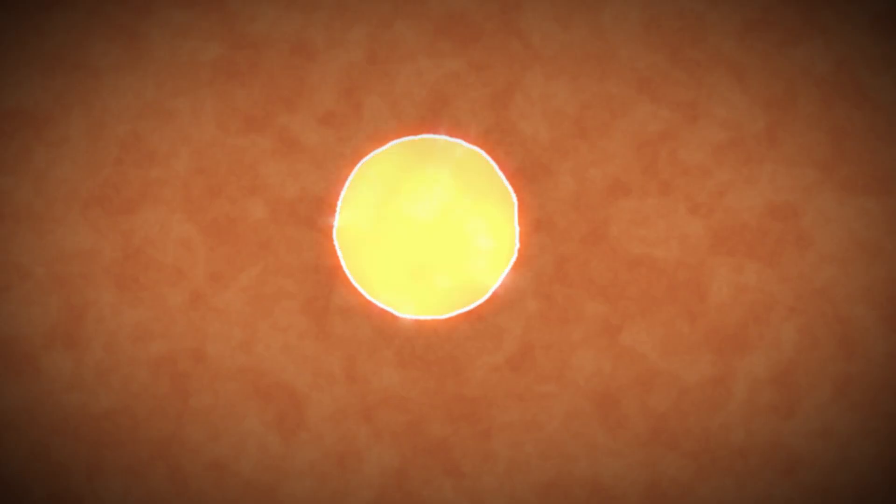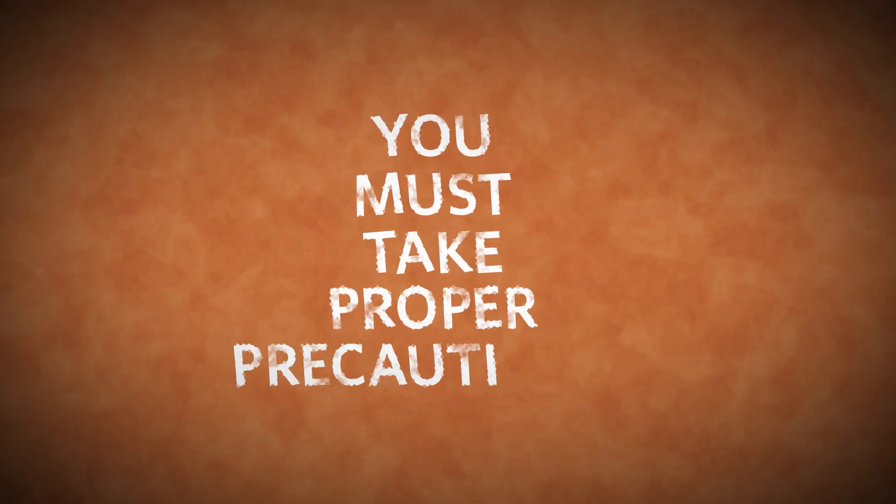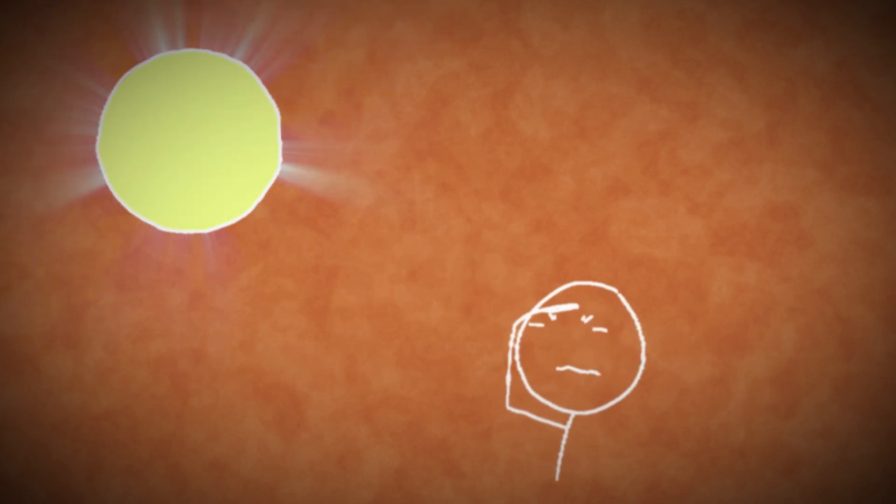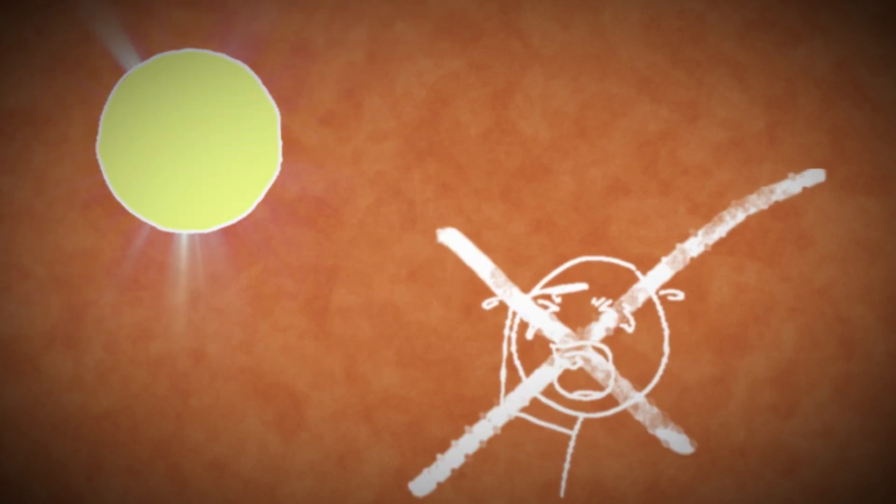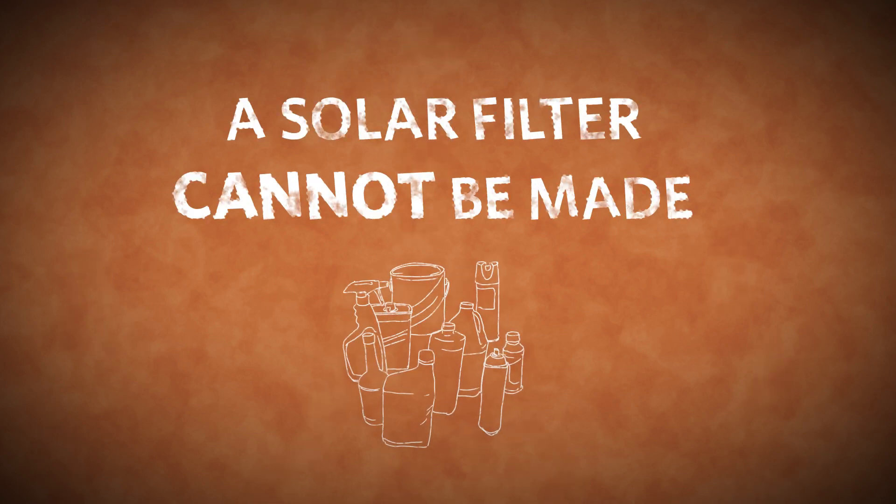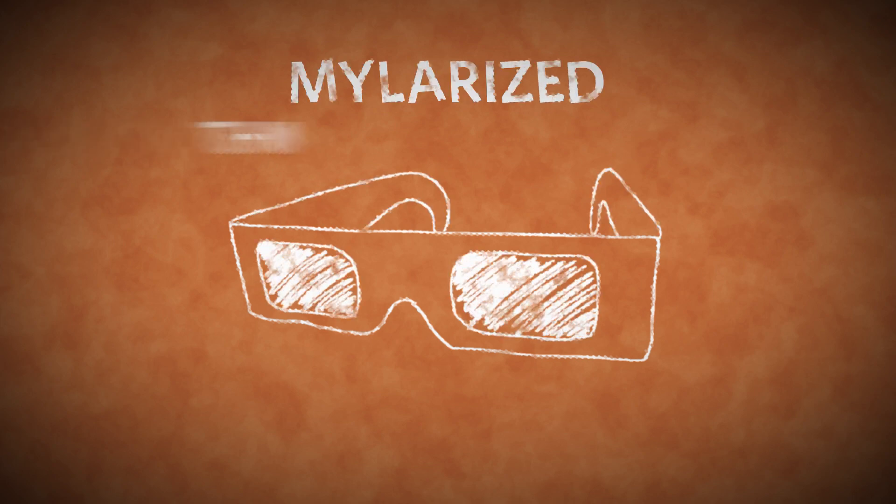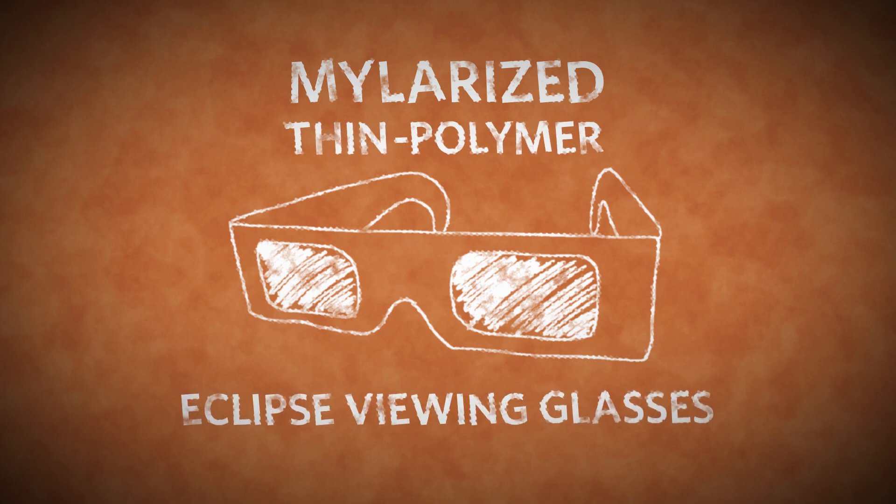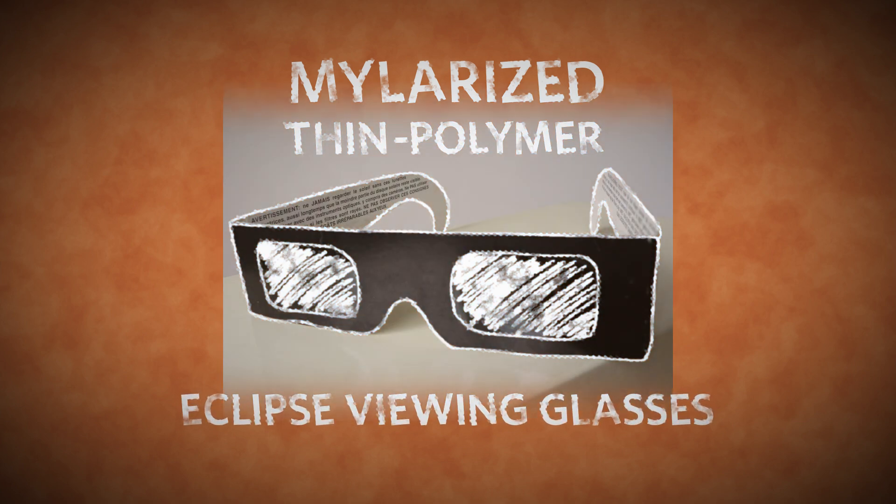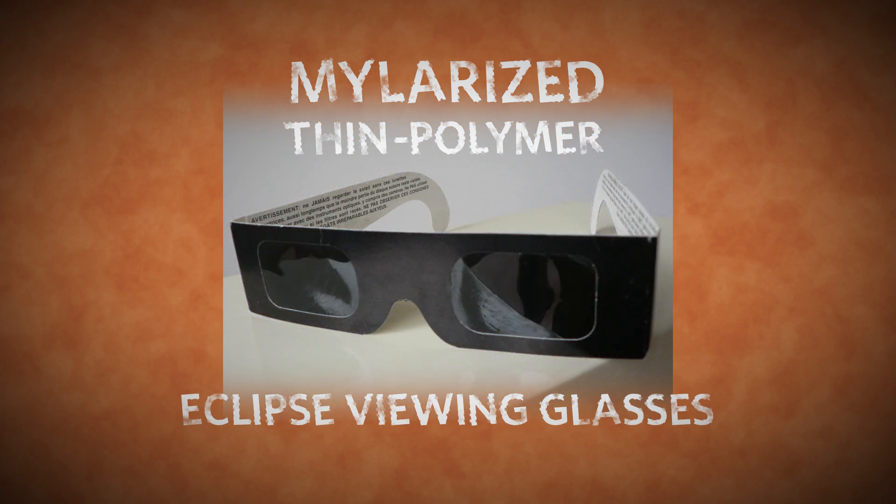As with all solar observing, you must take proper precautions to protect your eyesight. Looking at the bright sun without any protection will cause permanent eye damage, and a safe solar filter cannot be made from common household materials. Proper filters are specifically designed for observing the sun. The best options include mylar or thin polymer eclipse-viewing glasses, but make sure that they're in good condition, with no wrinkles or pinholes.